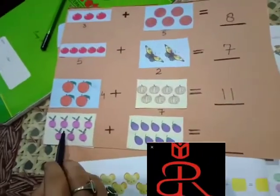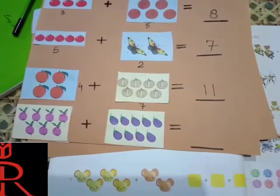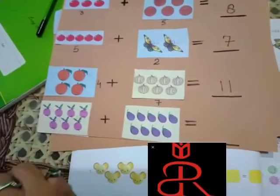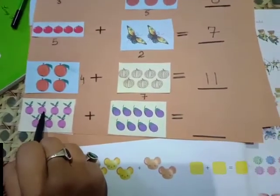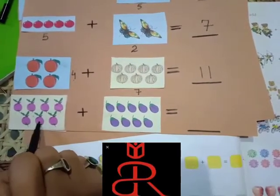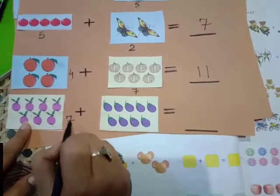Now, next question. See, here I have this fruit. This is turnip. Yeah, I have turnips. So, how many turnips we have? One, two, three, four, five, six, seven. We have seven turnips.